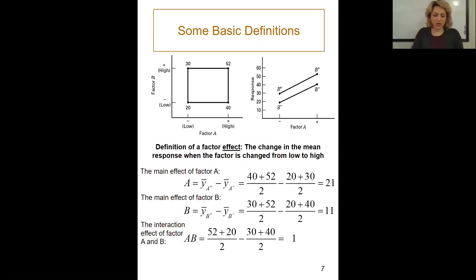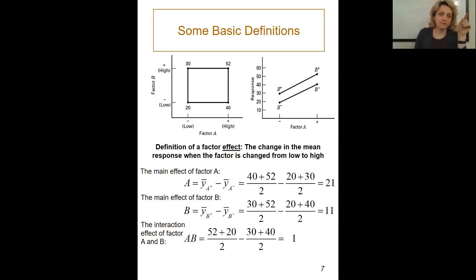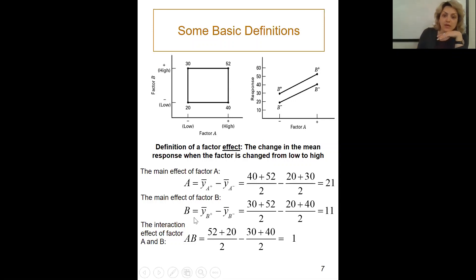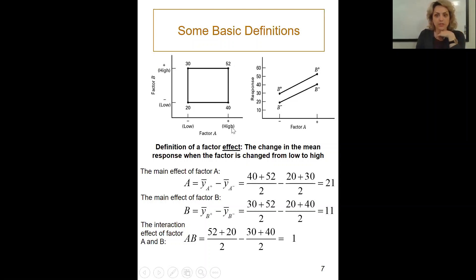You'll see that simply from this value of 21 we can find the coefficient for Factor A in our regression model — I'll talk about that shortly. The main effect of Factor B is calculated the same way: (30 + 52) / 2 for the high level of B, minus (20 + 40) / 2 for the low level of B, giving a main effect of 11.